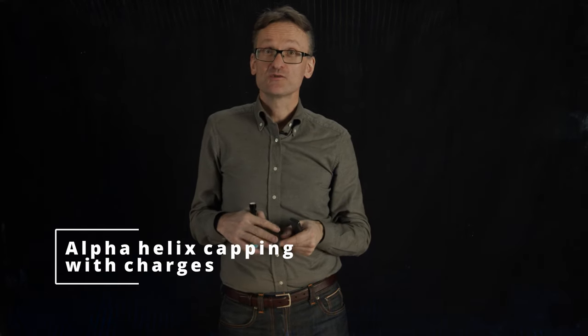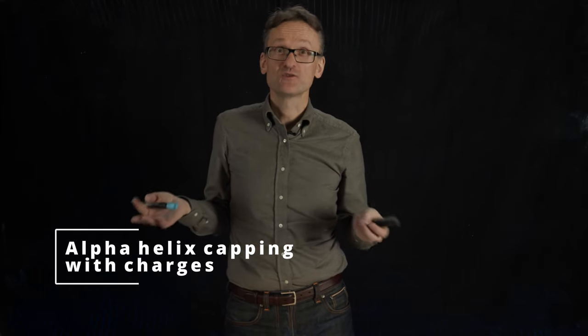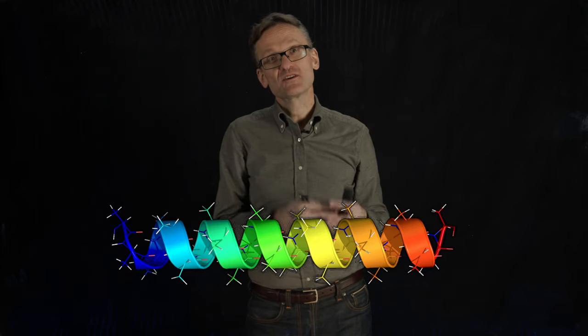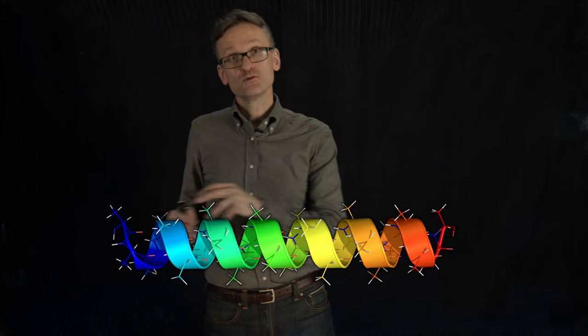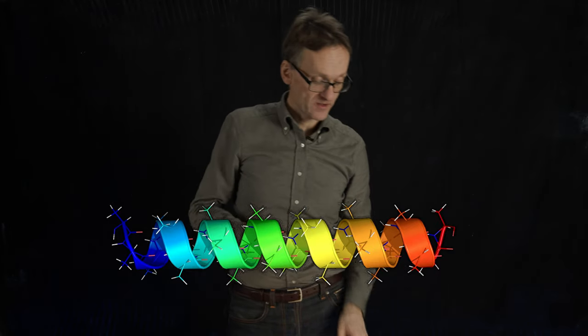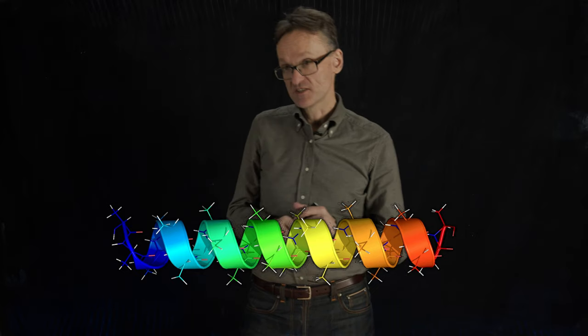I want to share an example to show how nature has evolved to use physics to do fun things. This is a simple alpha helix that occurs throughout proteins. We frequently color them from blue to red, where blue is the N-terminus and red is the C-terminus.